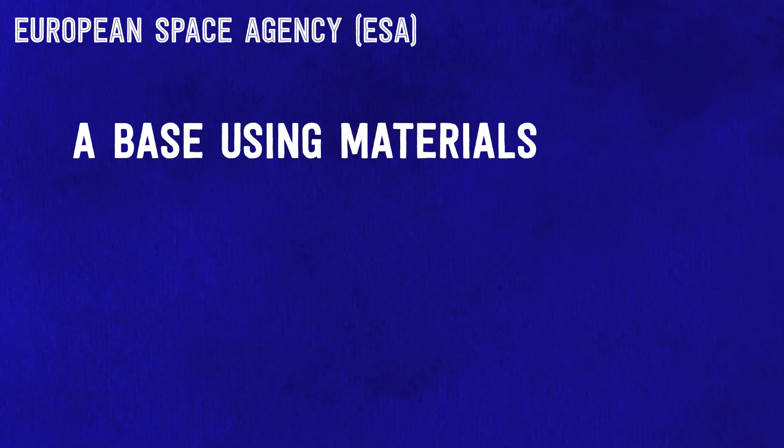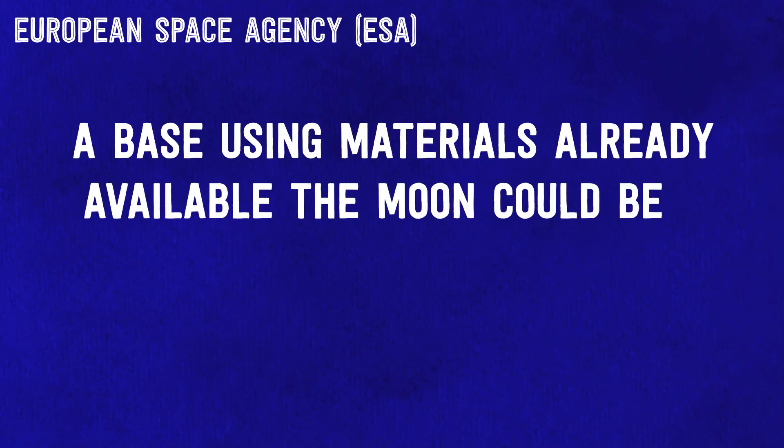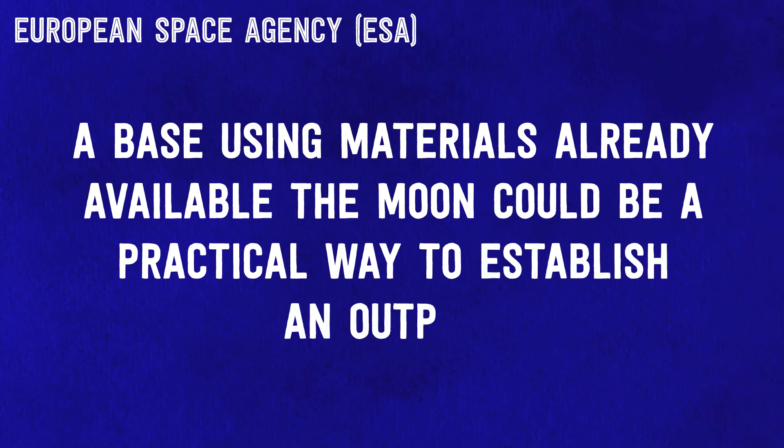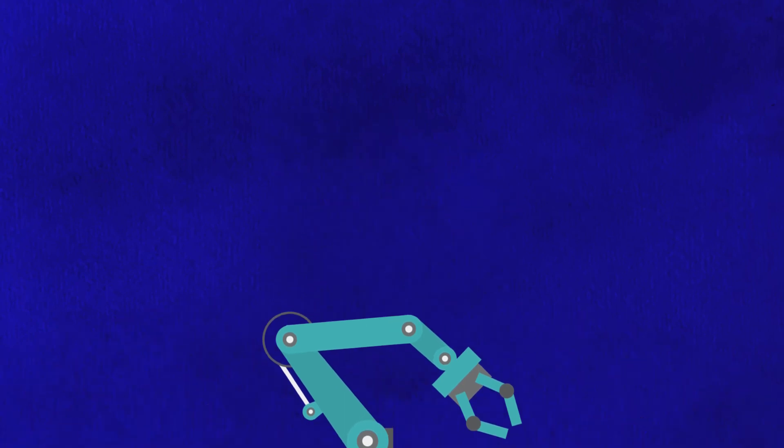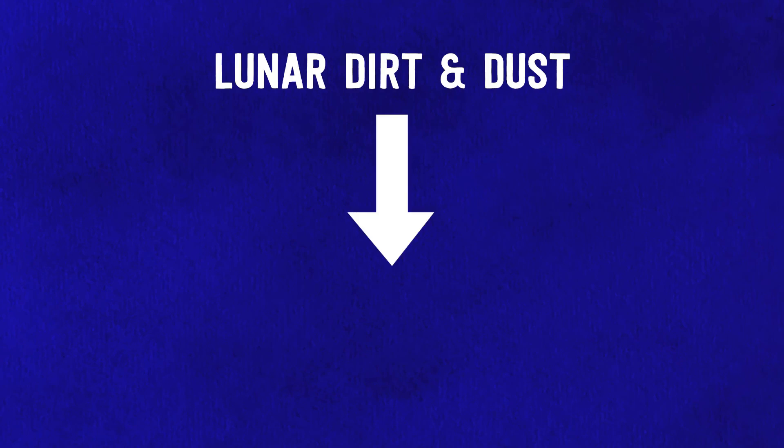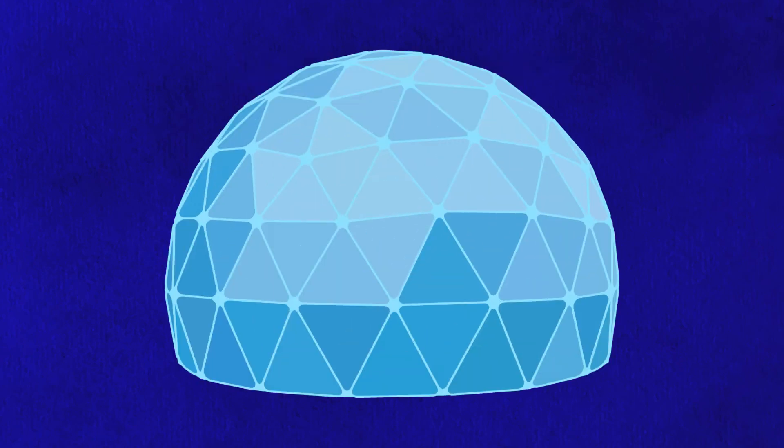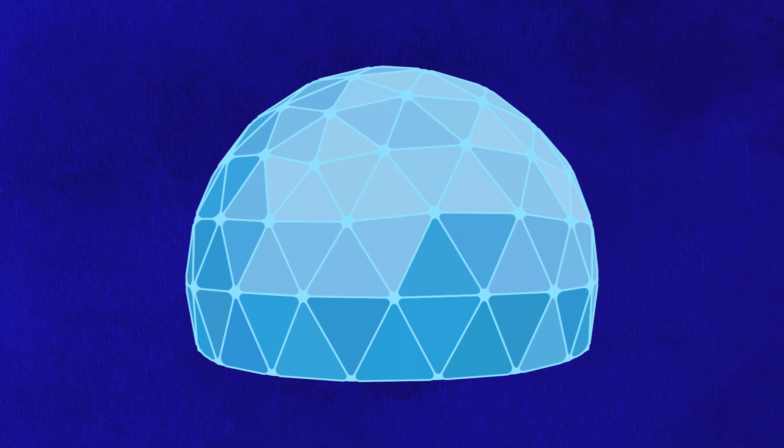European Space Agency found that a base using materials already available on the moon could be a practical way to establish an outpost. Under the ESA's hypothetical plan, a robotic mission to the moon could do most of the work before astronauts ever needed to set foot on the lunar surface. The robot would use a mixture of lunar dirt and dust called regolith to cover an inflatable dome with layers of the robust material.